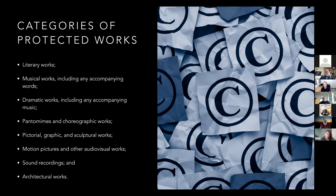Congress has provided a list in the Copyright Act of what 'original works of authorship' actually means. There are categories of protected works defined by statute. For our previous music presentation, we were concerned about musical works and sound recordings. Today we are concerned about two different categories: pictorial, graphical, and sculptural works, and motion pictures and other audiovisual works. Those are the categories we're talking about today.